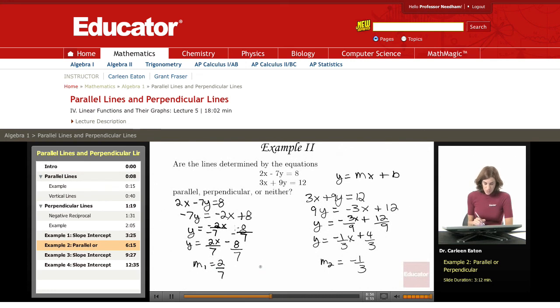Are they perpendicular? Well, if these were perpendicular, then I would expect that if I multiplied them, if I found their product, it would equal negative 1. But it does not equal negative 1. These slopes are not negative reciprocals of each other.